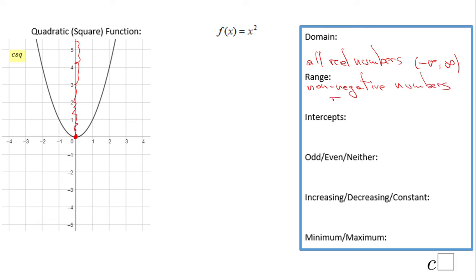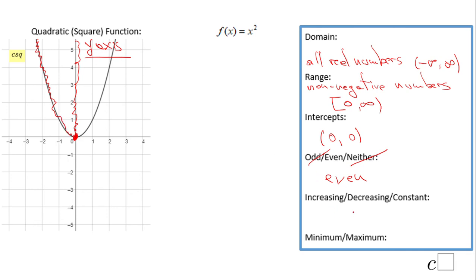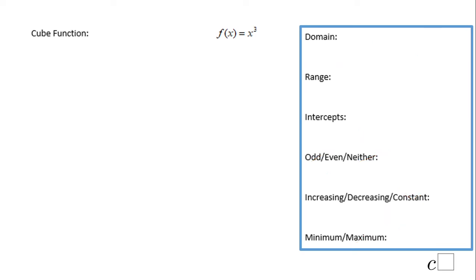In interval notation the range is [0, infinity). We have one intercept which is both the x and y intercept at the origin (0, 0). Looking at the picture, it is symmetrical about the y-axis, so the function is even. Similar to the absolute value, this function is decreasing from negative infinity to 0, then increasing from 0 to infinity, and never constant. We have an absolute minimum at (0, 0).